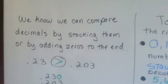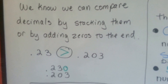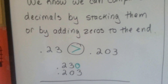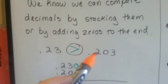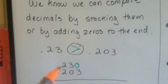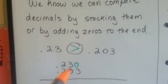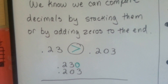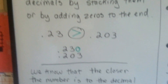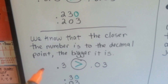We know we can compare decimals by stacking them or by adding zeros to the end. Which one's bigger — 23 one-hundredths or two hundred and three-thousandths? By adding a zero to the end of the 23 hundredths, we can see that it is bigger than two hundred and three-thousandths. Thirty is bigger than three.